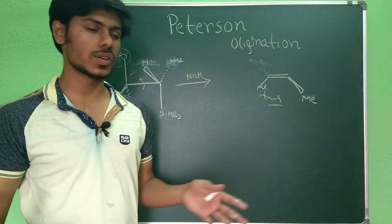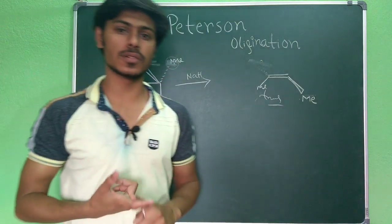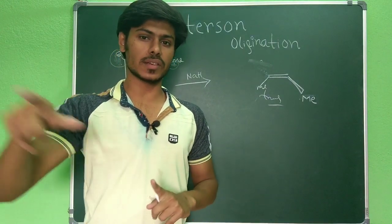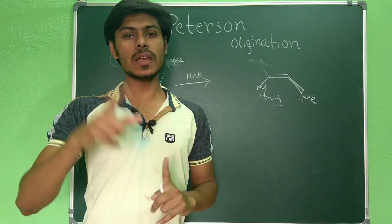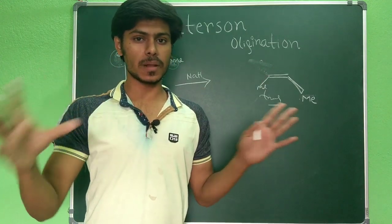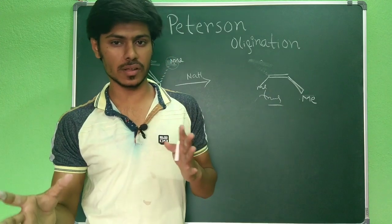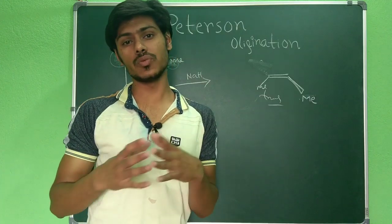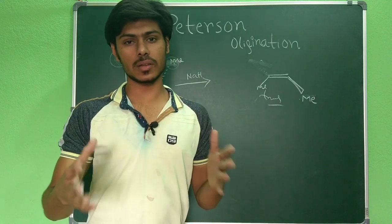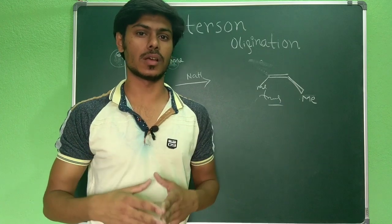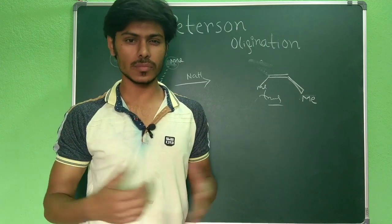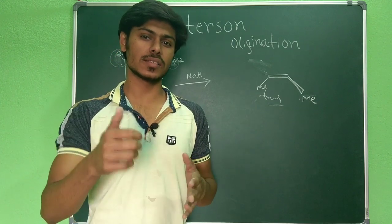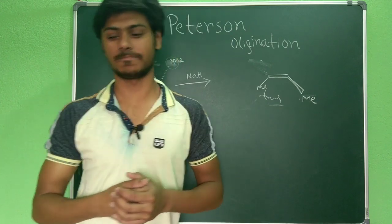Whenever you are given a question related to the Peterson elimination reaction, you must first determine whether the reaction is in acidic or basic medium. If the reaction is in acid, it proceeds via an E2 elimination with an anti-periplanar transition state. If the reaction is in basic medium, it proceeds via syn elimination through the cyclic oxetane intermediate, and the product will be different accordingly. I hope that is clear. Thank you for watching, and if you want more videos like this, please subscribe to the channel.